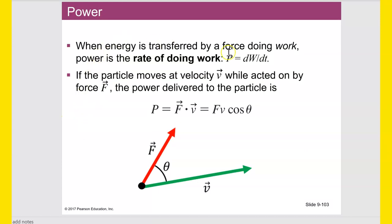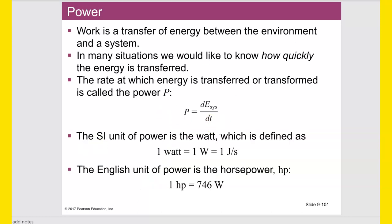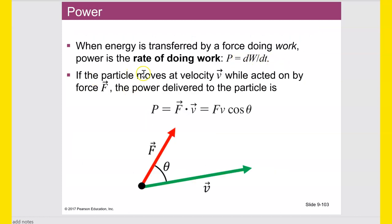When energy is transferred by a force doing work, power is the rate of doing work: dW/dt. Since dE/dt and dW/dt are equivalent, and if a particle moves at velocity v while acted on by force F, the power delivered to the particle is force times velocity — or, as vectors, F dot v. If they are not in the same direction, you use the dot product: force magnitude times velocity magnitude times the cosine of the angle between them.